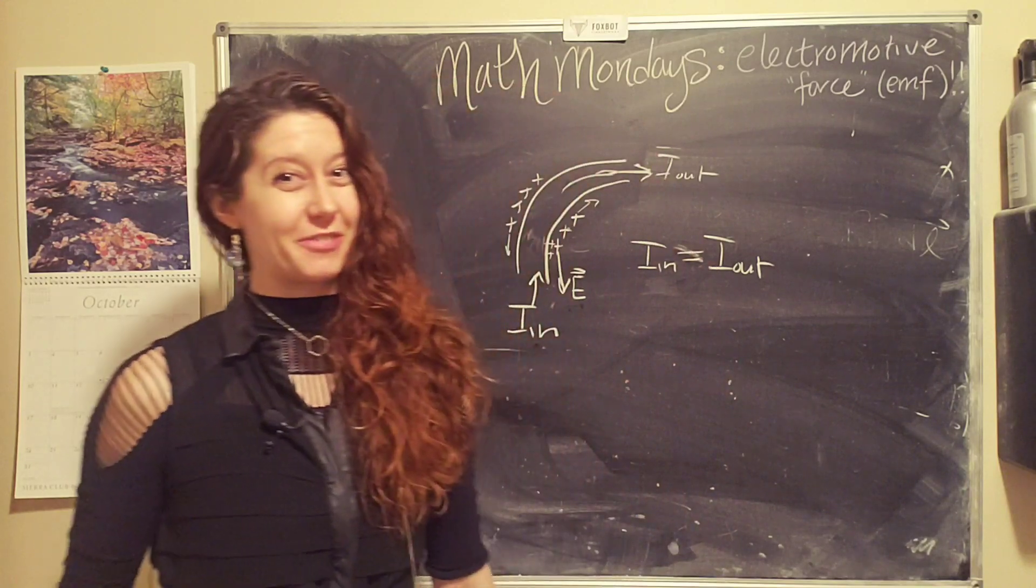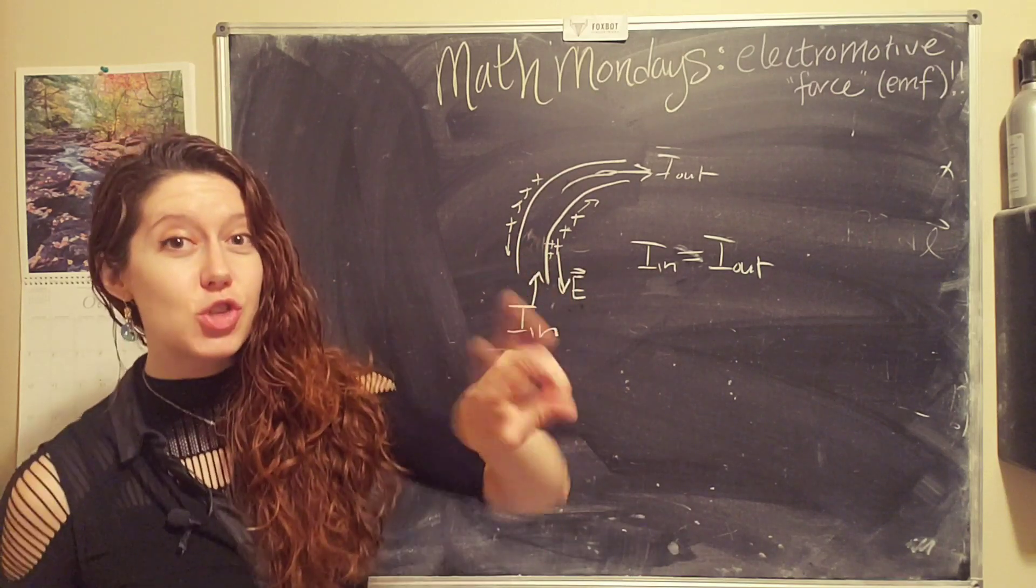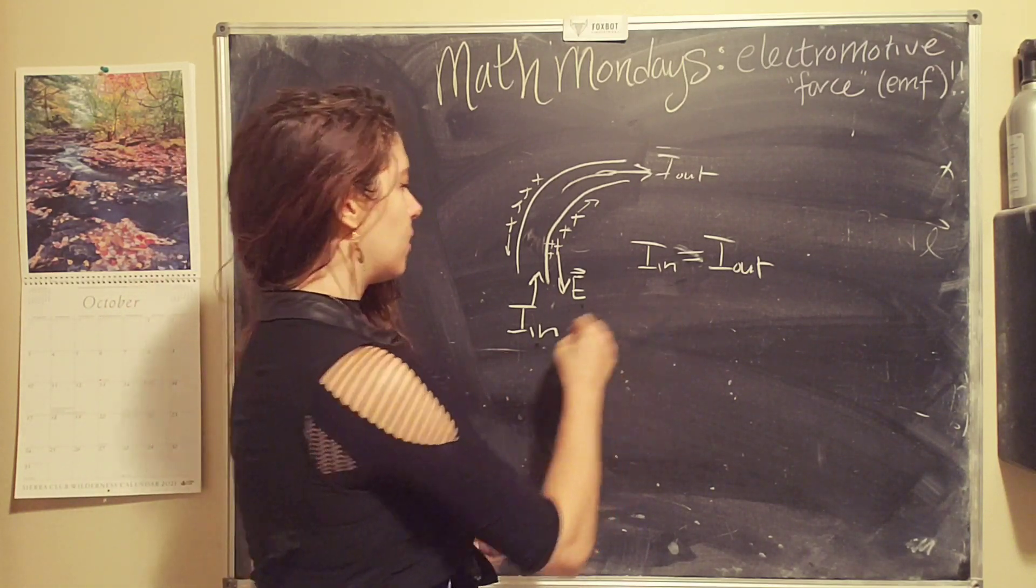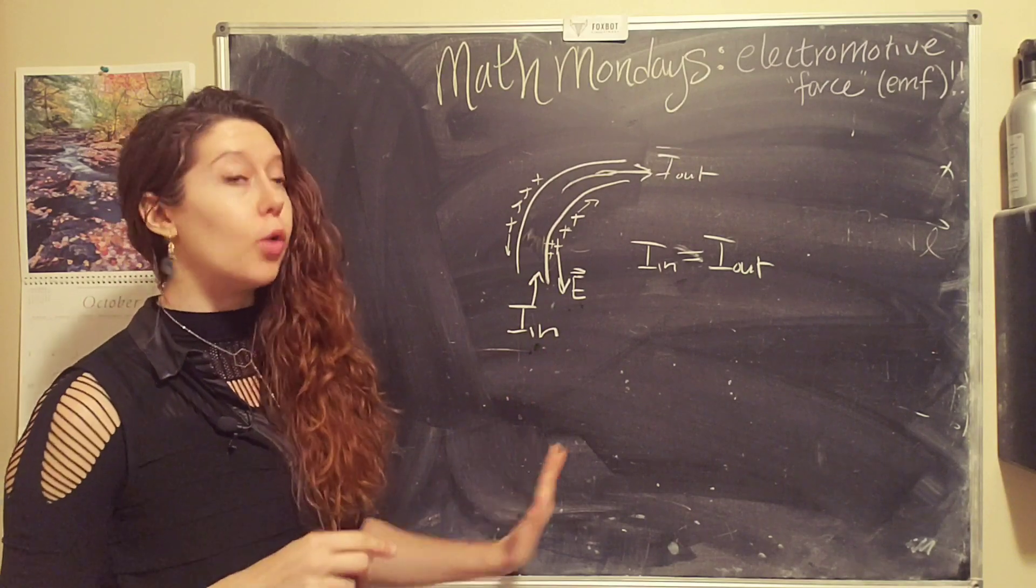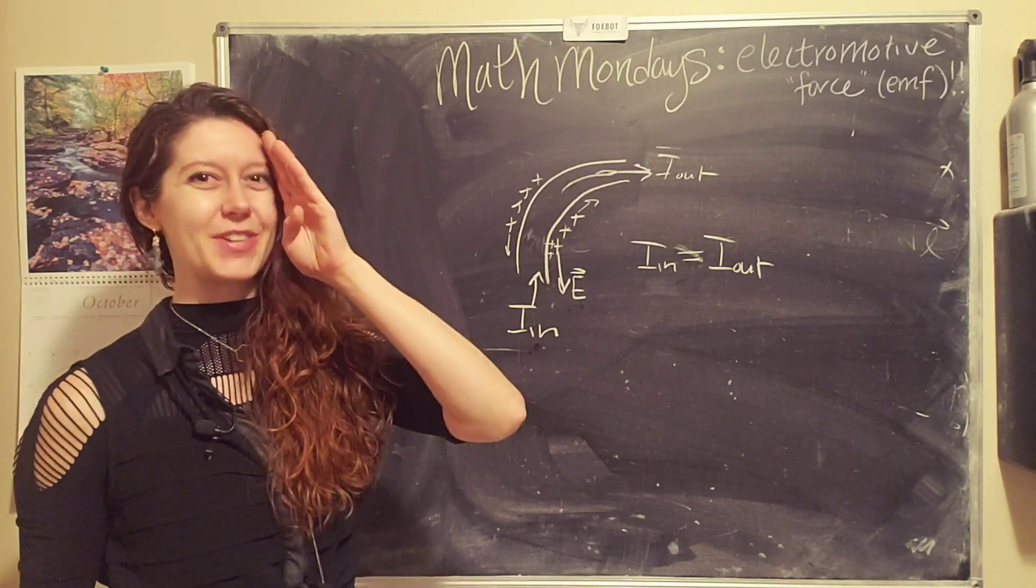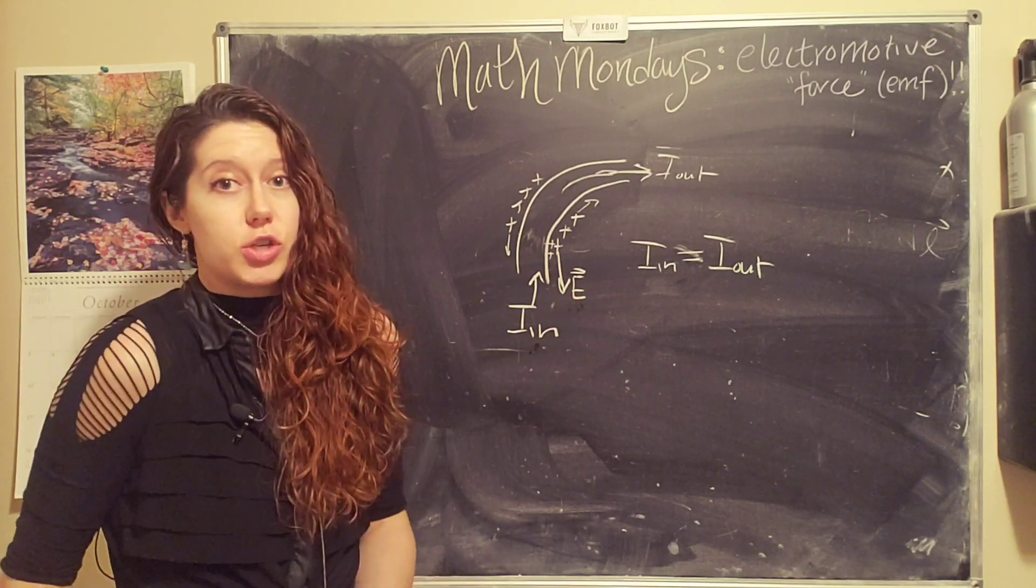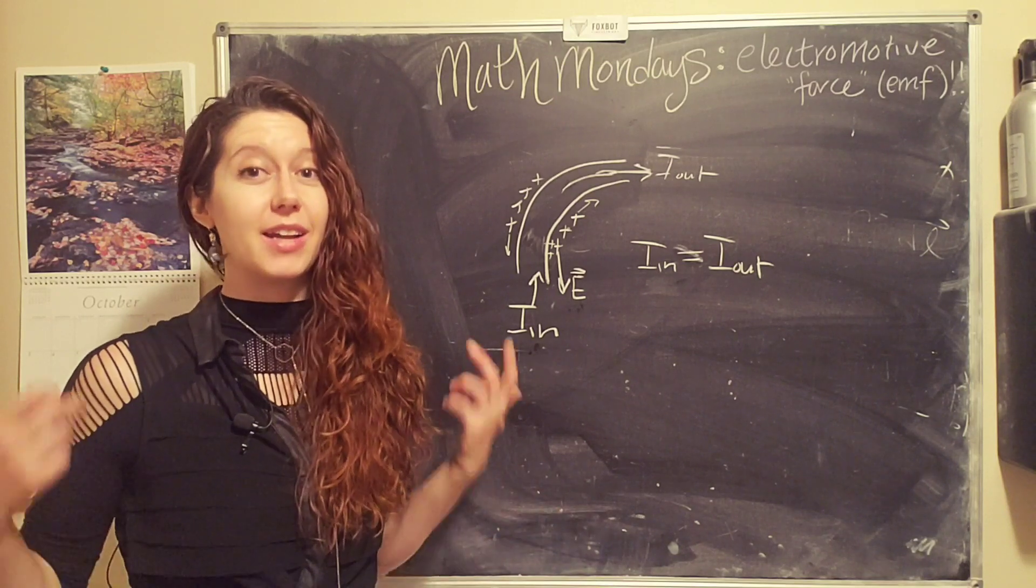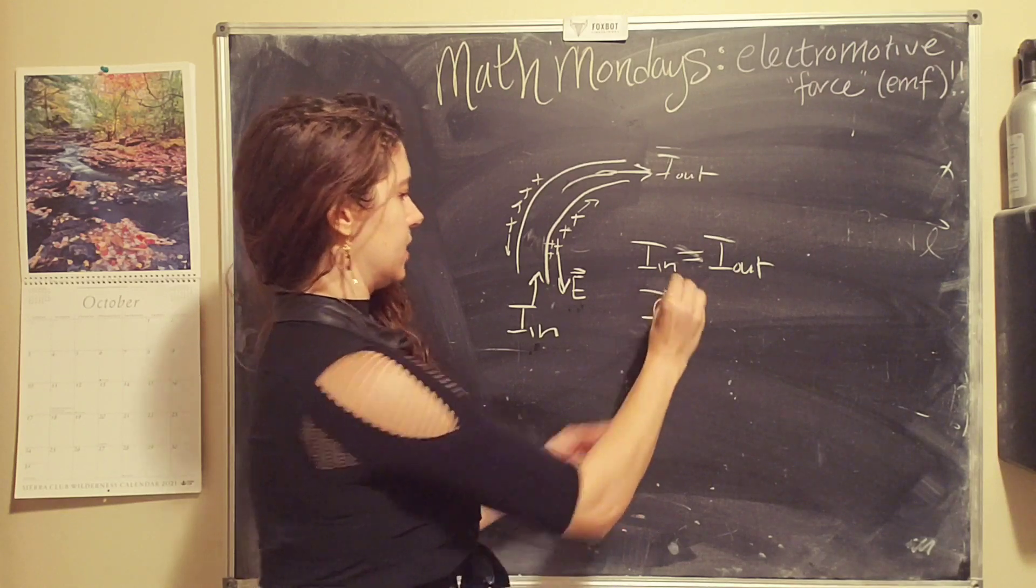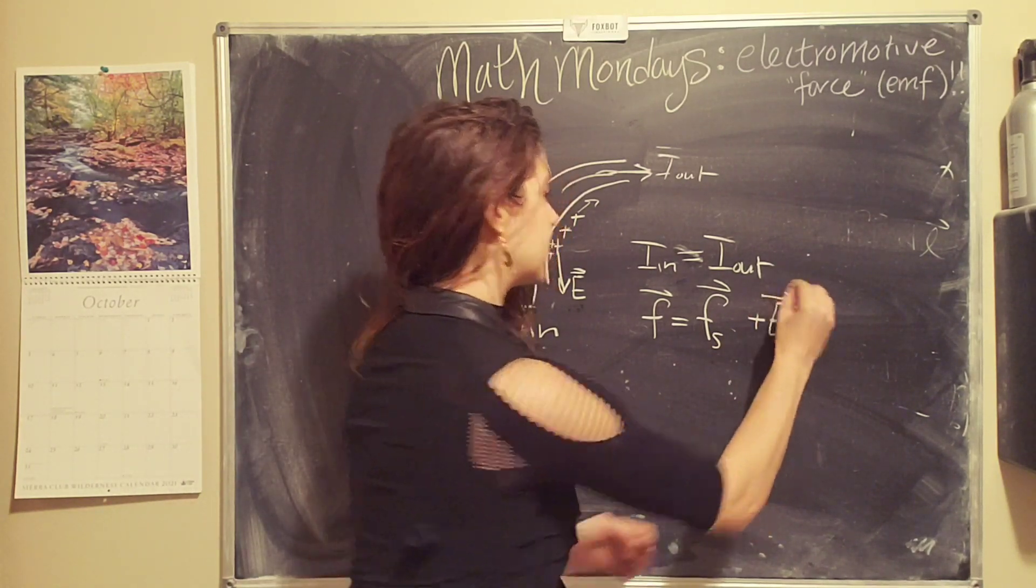What does this mean? Why should we care? Well, basically, what this tells us is that there are actually two forces at work in our circuit. We have the force that's causing the current to flow in, we'll call that the force of our source, and then we have the electrostatic force, which is a result of the charges just being charges and having an electrostatic field. The net effect is that we have this total force in our circuit, which we can represent by the force of our source, plus this electrostatic force.